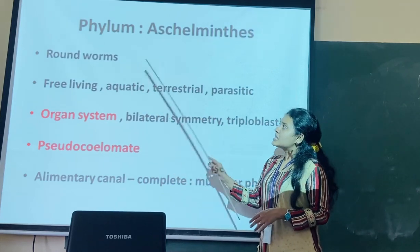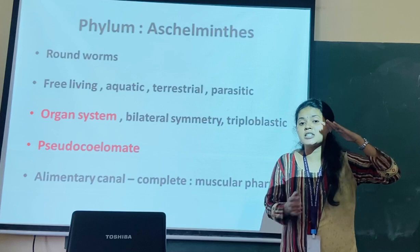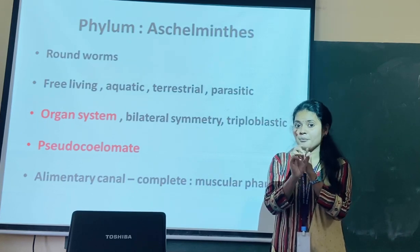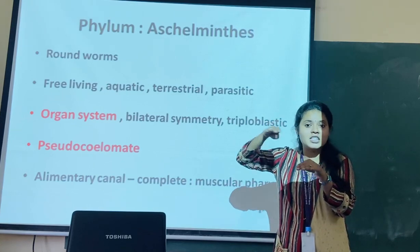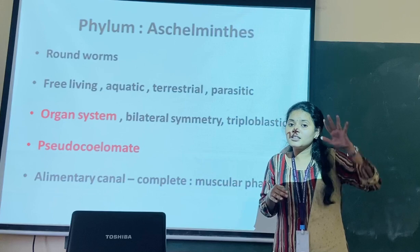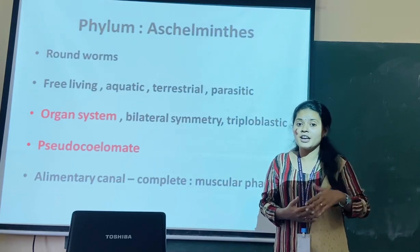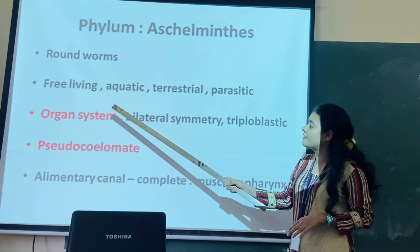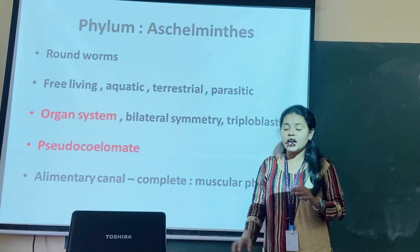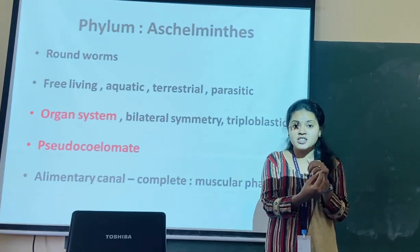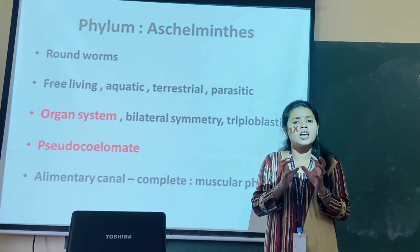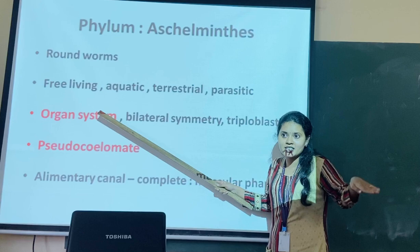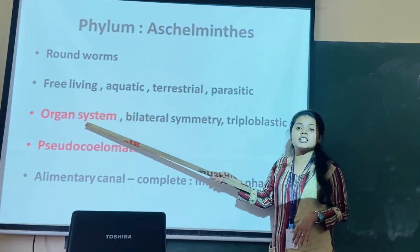This is the phylum which has developed organ system level of organization. Porifera had cellular level of organization, then tissue level of organization was discussed, and Platyhelminthes had organ level. Now Aschelminthes is the first phylum in the hierarchy to have developed organ system level of organization, with advanced features like an advanced digestive system and circulatory system.